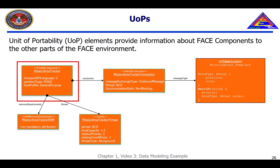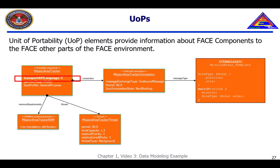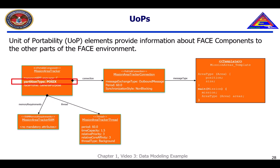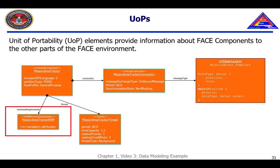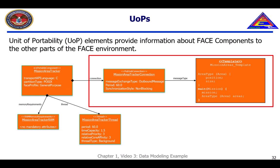A UOP describes, at a minimum, the programming language in which the software component has been written, the partition or operating system type, the FACE profile or level of safety and security constraints to apply, the thread information, the random access memory requirements for the component, and a connection to send or receive information in addition to describing the characteristics of the message exchange. The connection, very importantly, identifies the template describing the message to be exchanged.